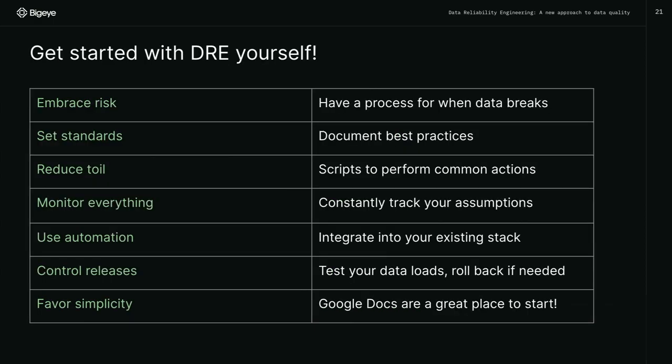Let's get started with DRE yourself. You don't have to go build UDQ or Midas, you don't even need a big team — you need one person. If you're a solo data engineer at a startup and you feel the weight of the world on your shoulders because you've enabled a bunch of jobs in Fivetran and you're sinking 100 different pipelines into Databricks, let me help you. Embrace risk: have a process for when something goes wrong. Things will go wrong — just write down a process. Maybe that process is going into Slack and posting in a data channel saying this table is broken. It's a process. Is it great? No. But you can get started.